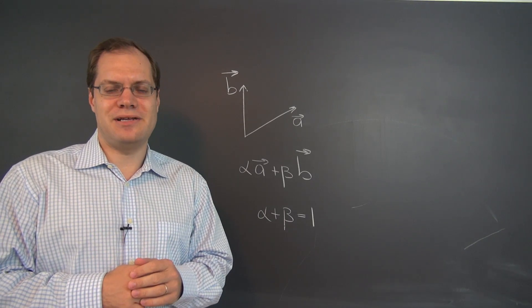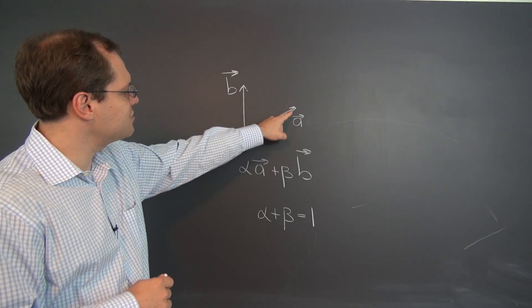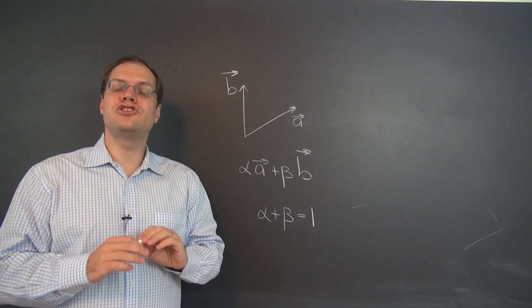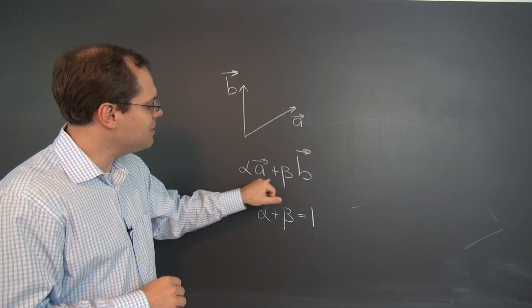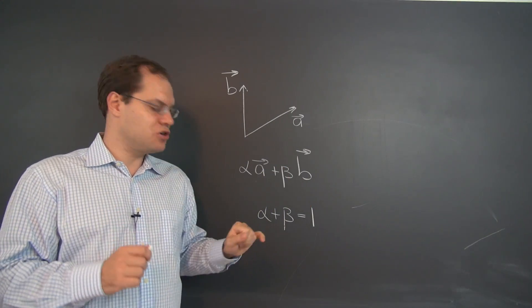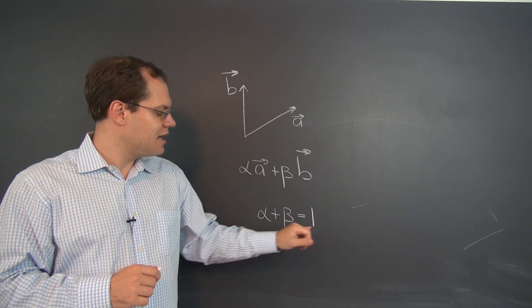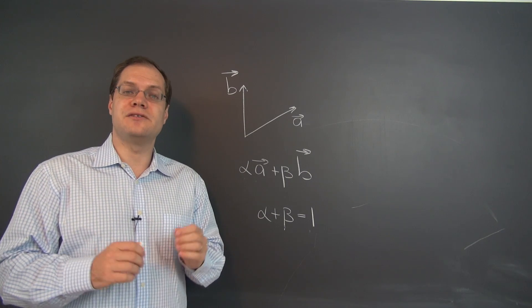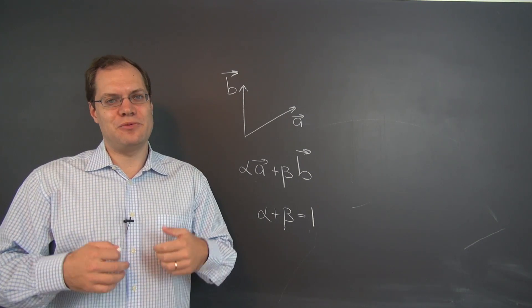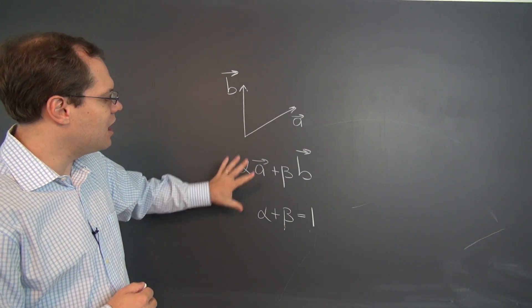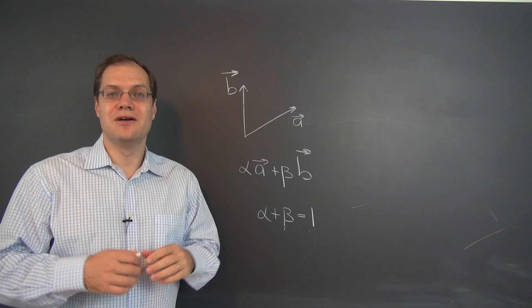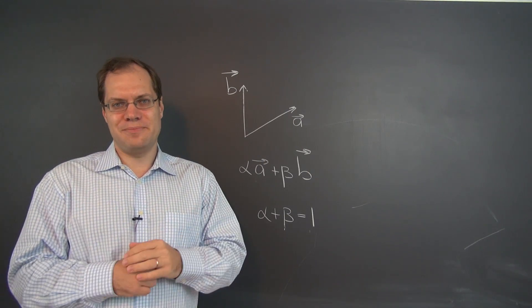Okay, here's another interesting linear combination question. Consider two vectors, a and b, and consider all possible linear combinations of these vectors, alpha a plus beta b, such that the coefficients of the linear combination add up to one. This question is designed to help you practice linear combinations and to help you get used to this wonderful connection between algebra and geometry, which is what linear algebra is all about.